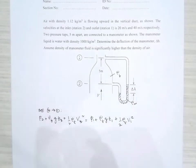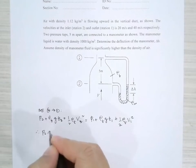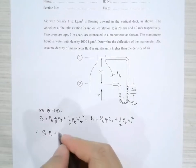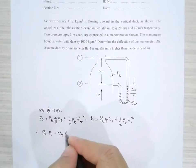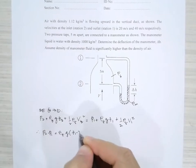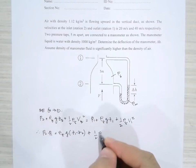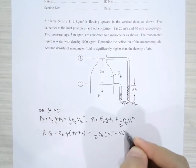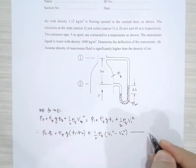P2 minus P1 equals rho fluid G times Z2 minus Z1 plus half rho fluid times V2 squared minus V1 squared. Let's call that equation number 1.